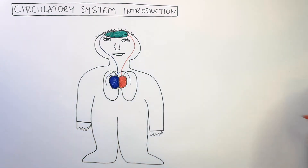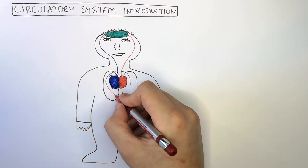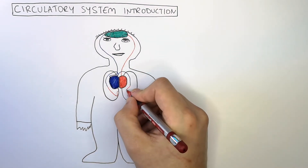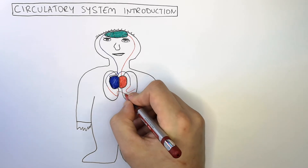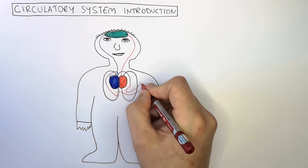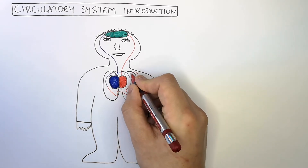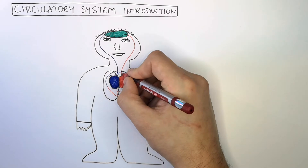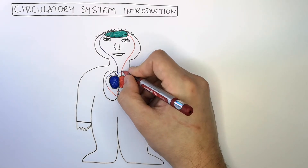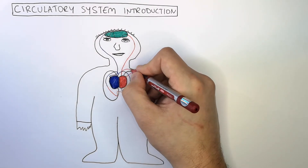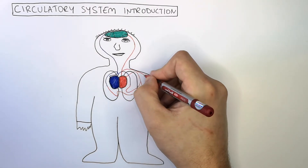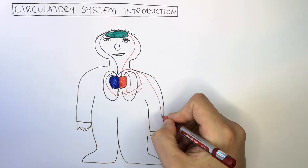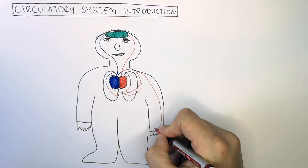In the lungs, blood becomes oxygenated — the blood picks up oxygen. This oxygenated blood is then returned back to the heart, whereby the heart then pumps the oxygenated blood around the body to supply respiring cells with oxygen and glucose.